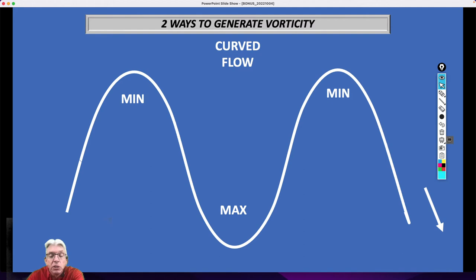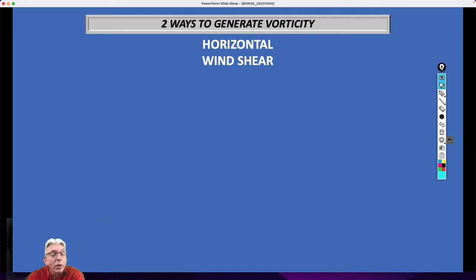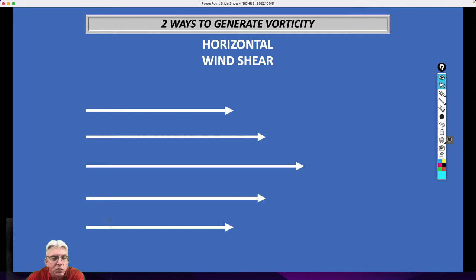Now we also have the horizontal wind shear component to all of this. Think of a jet stream blowing from west to east with the strongest winds in the middle, and then the winds drop off both to the north and to the south. If we impose a couple of circular objects within that flow, then the one to the north starts to turn in a counterclockwise manner and the one to the south in a clockwise manner. So just the horizontal wind shear is generating positive vorticity to the north of the jet stream and negative vorticity to the south.